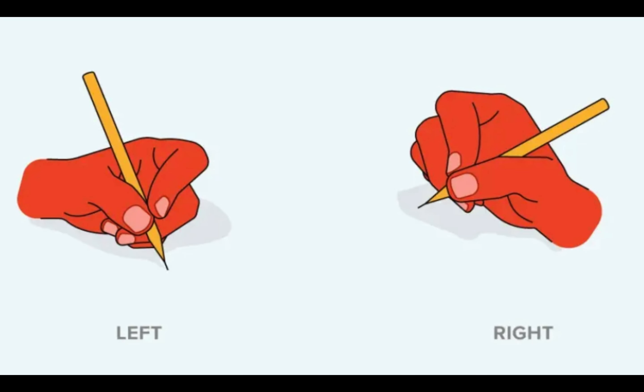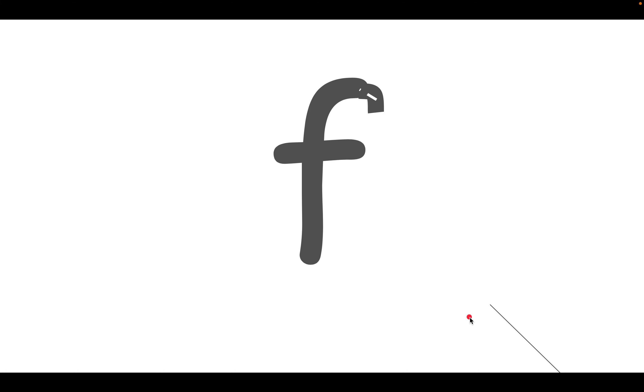Before you start writing, make sure you're holding the pencil correctly. This is the letter F. Start at 2 o'clock and curve backwards, go all the way down, jump up and go to the right. F for IF.